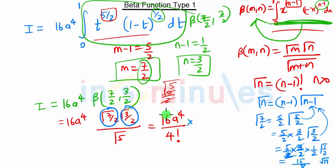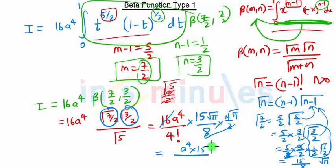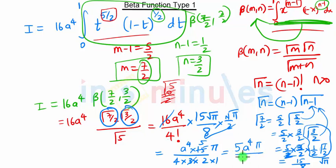Then we have Gamma of 3/2, and from here we have just calculated Gamma of 3/2 as half into Gamma of half, which is nothing but half root pi. So 8 into 2 is 16 — this 16 and the 16 out front will get cancelled. Then 4 factorial we can write as a raised to 4 into 15 root pi into root pi will be pi, and 4 factorial is 4 into 3 into 2 into 1. So we get 5 a raised to 4 into pi into 8, giving us the final solution of 5 pi a raised to 4 upon 8.